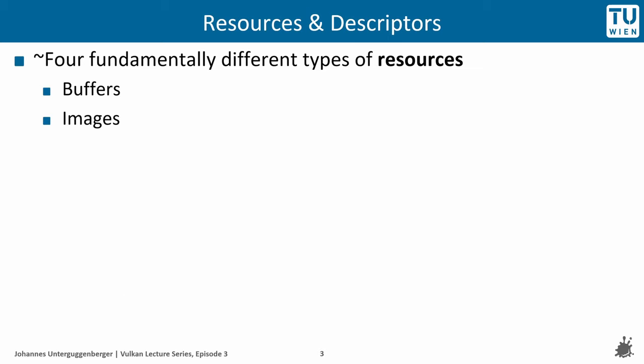For this episode's topic, we are first going to take a look at the different resource types and then at the descriptors. The specification says that there are two primary resource types in Vulkan, namely buffers and images.